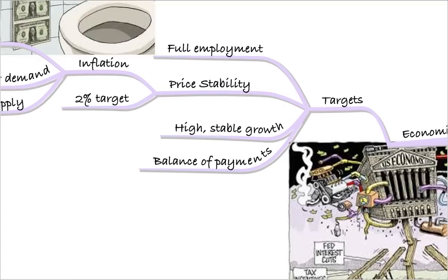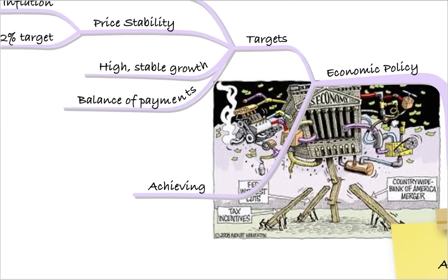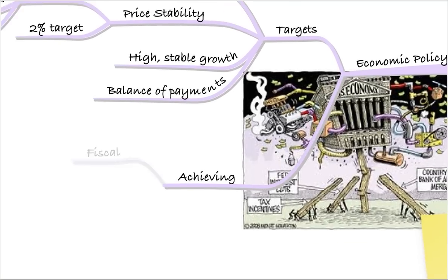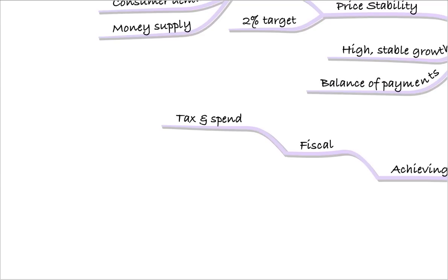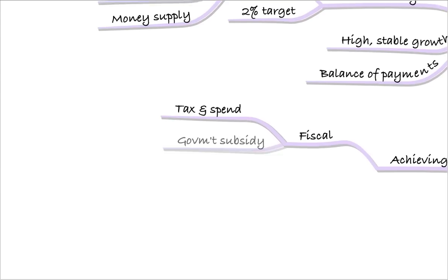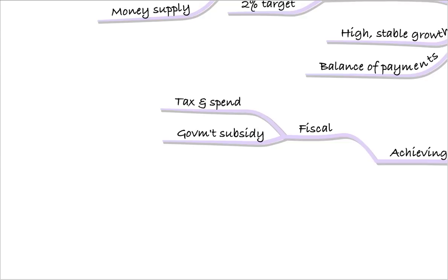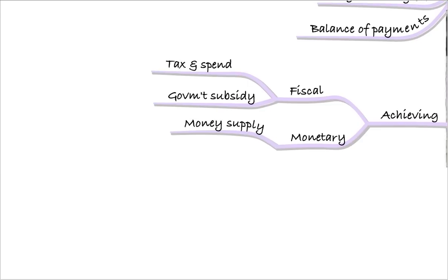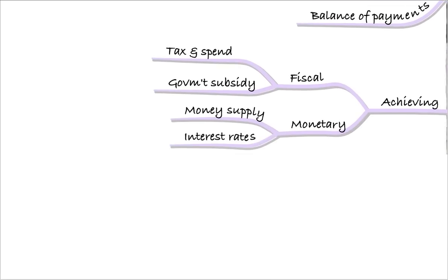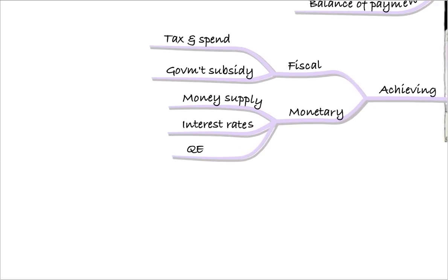The last target is to maintain a balance of payments on imports and exports. So how can policy makers achieve these? There are two real methods. The first is fiscal policy — tax and spend. The government takes money through tax and spends it on services in the economy. Government subsidies also form part of fiscal policy. Monetary policy involves controlling the money supply using things like interest rates or, in extreme cases, quantitative easing, as we've seen recently in both the UK and the US.